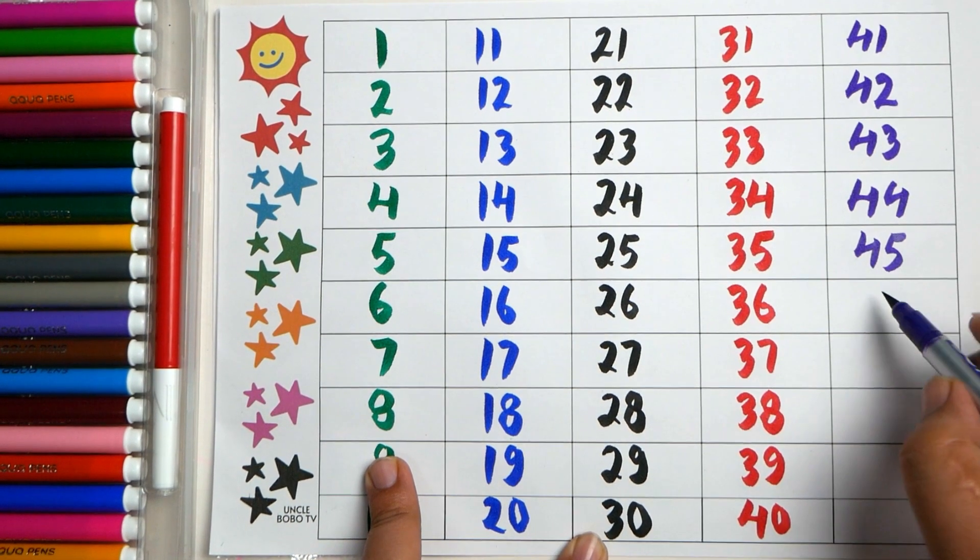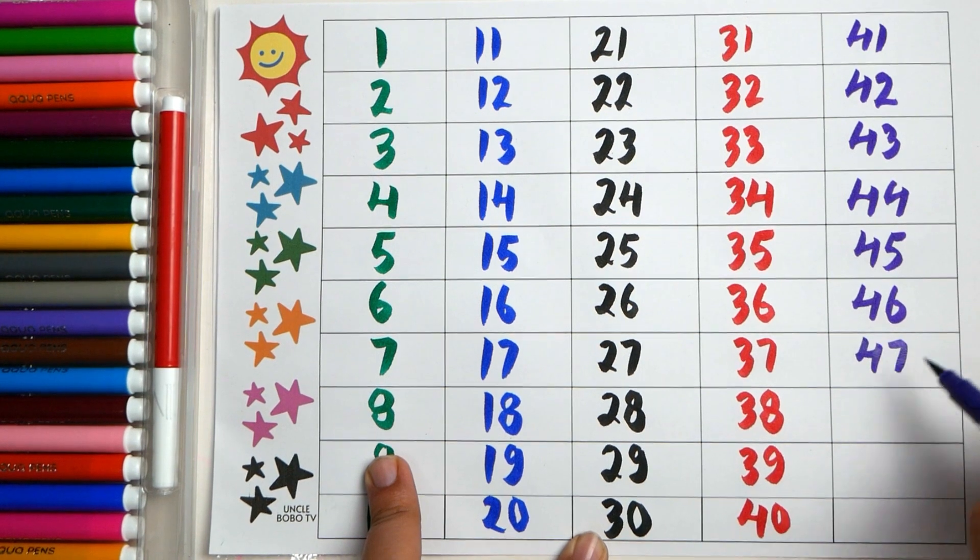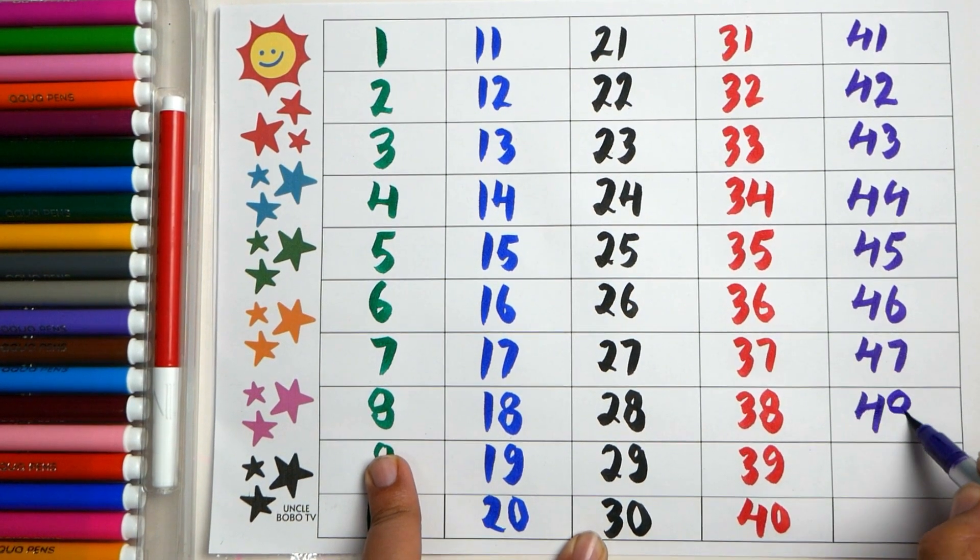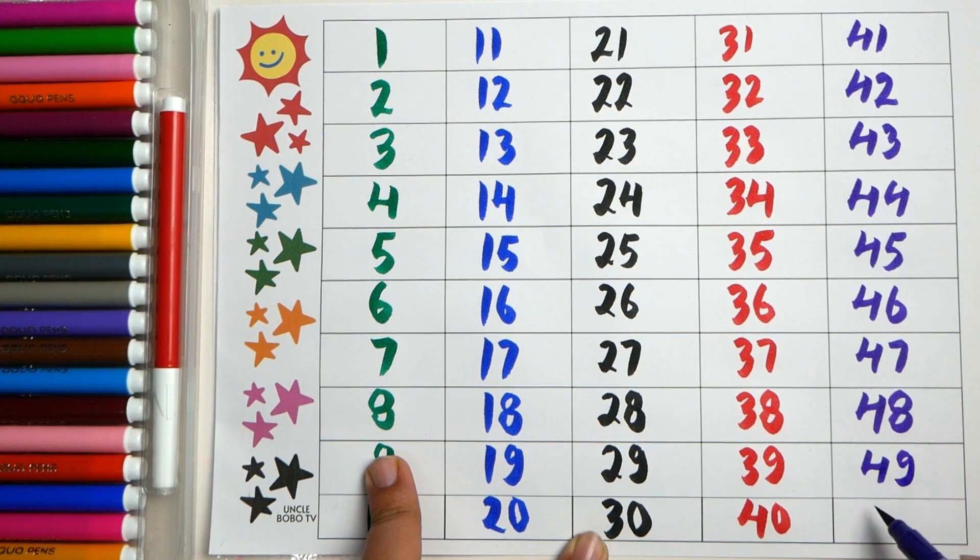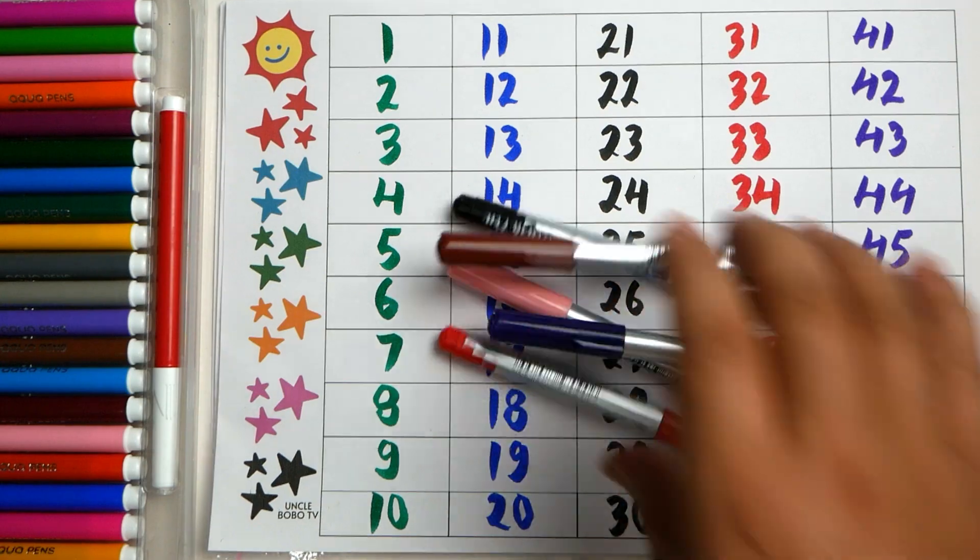Forty-five, forty-six, forty-seven, forty-eight, forty-nine, fifty. Forty, forty-one, forty-two.